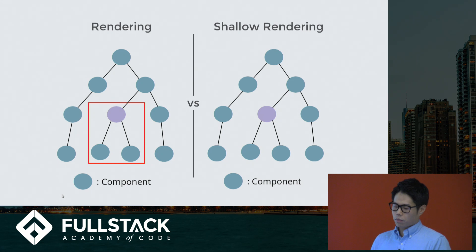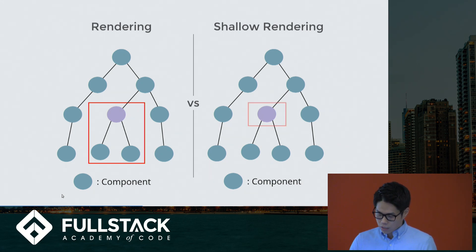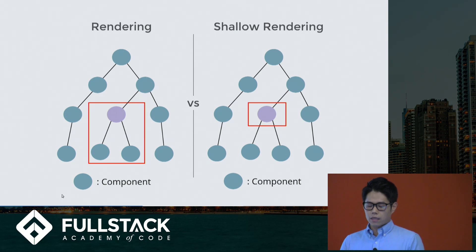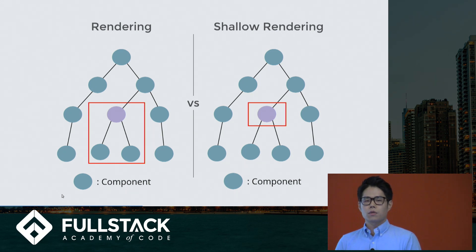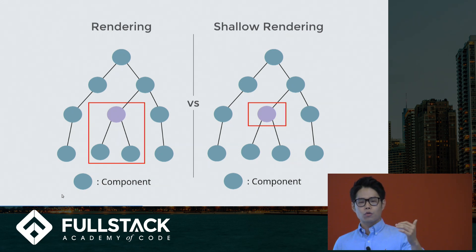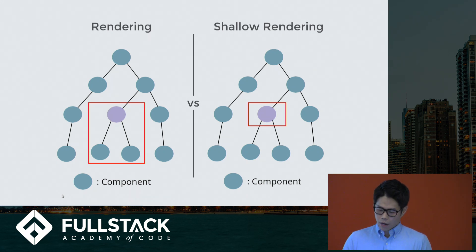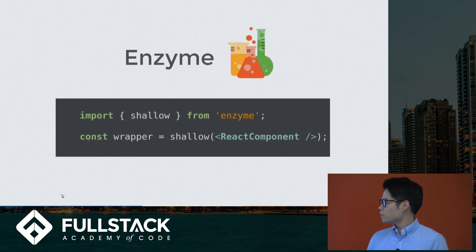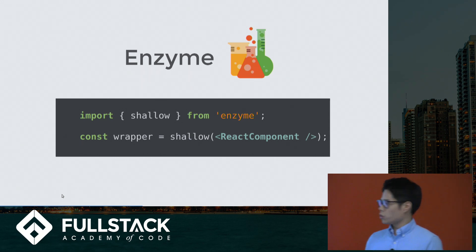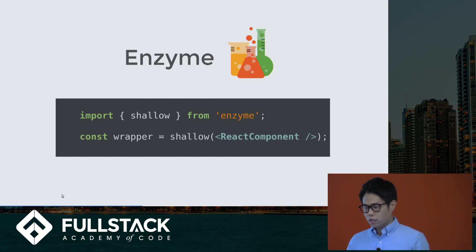But React also provides a method called shallow rendering. What shallow rendering does is that you can isolate testing just that component. But before Enzyme, shallow rendering testing was still difficult because it was hard to find a React component — you would have to traverse from your root component and do something like ReactComponent.props.props.props to find that component. So what Enzyme provides — this is where Enzyme comes in — it exports a method called shallow. You pass in the React component, and it returns a jQuery-like wrapper that wraps around the shallow render tree.